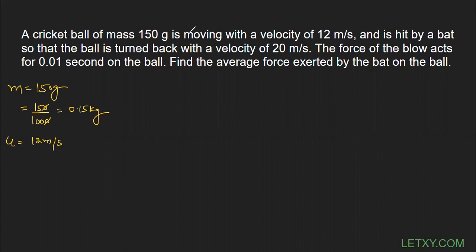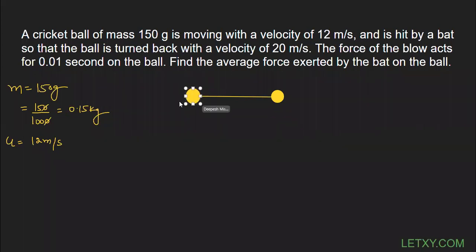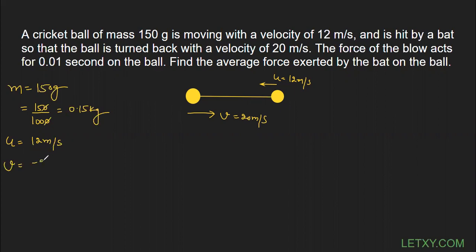The ball is hit by a bat. Think of it this way — initially the ball is thrown by the bowler, so the initial velocity u is 12 m/s in that direction. The batsman is on the other side and he turns the ball back with a velocity of 20 m/s. The direction has been totally changed, so we write v = -20 m/s, because velocity is a vector quantity and we need to consider direction.